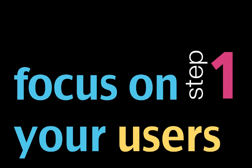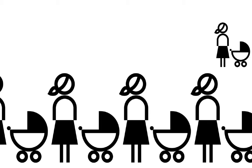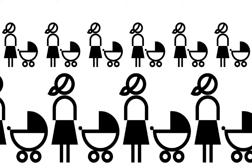Step one: think about your users. Users should be at the heart of the program design process. After all, you're creating the program for them. Before you get started designing any program, you should spend time thinking about your customers and their needs. Rather than using a scattergun approach, think about all the different types of customers you serve and break them up into user groups — groups of people who share common characteristics and very often common needs.